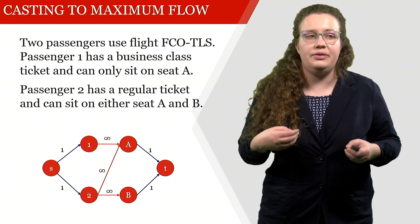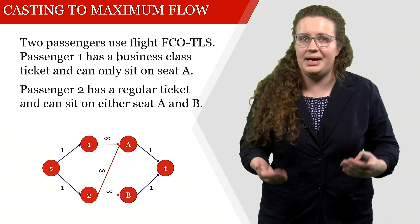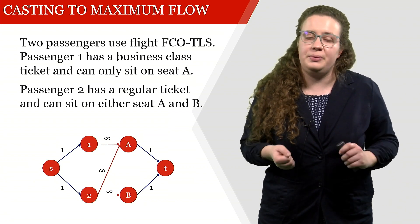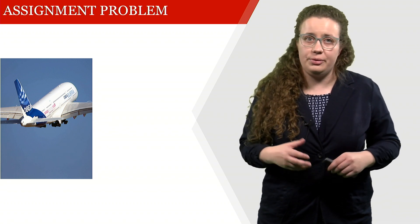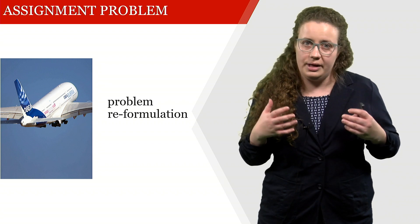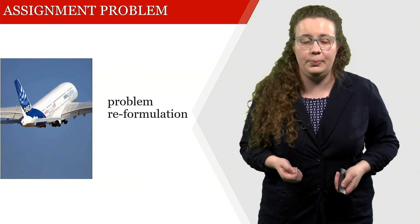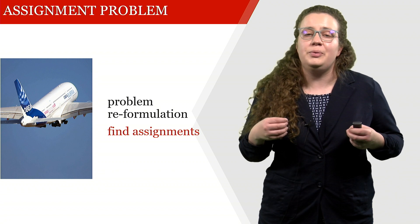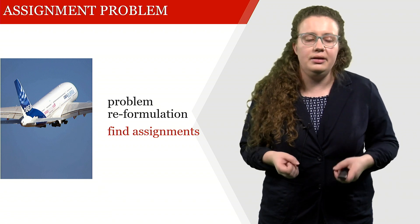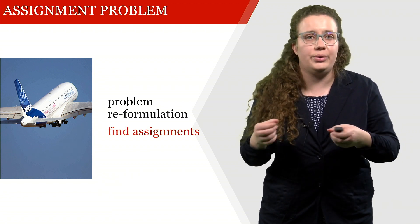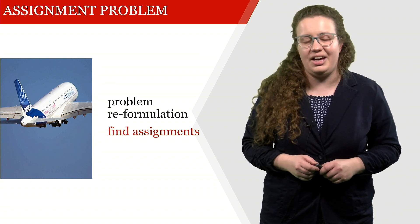With this network, you have a maximum flow problem, even though you originally started with assigning passengers to seats, which means you can solve it with a maximum flow algorithm. The key takeaway from the assignment problem is how to reformulate a problem — here, casting an assignment problem into a maximum flow problem. As homework, find the assignments to determine which passenger sits on which seat, both on this small problem and on a bigger problem with the actual network.